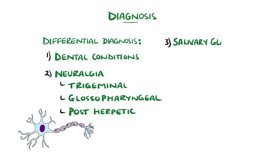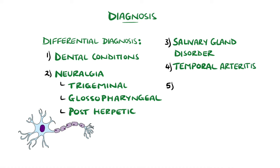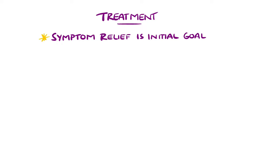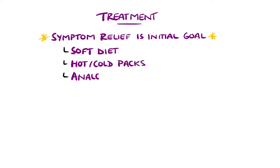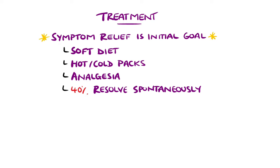Disorders of the salivary glands, temporal arteritis, and migraines are also included, as well as ENT infections such as sinusitis and ear infections. For the treatment, symptomatic care is the first line, which includes a soft diet, hot and cold packs, and analgesia. 40% of patients will have spontaneous resolution of symptoms.